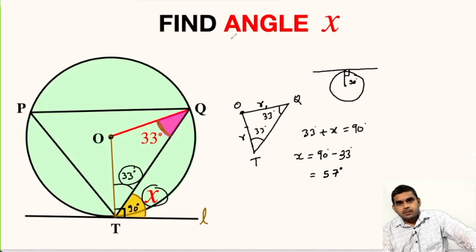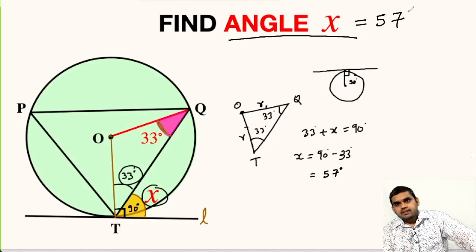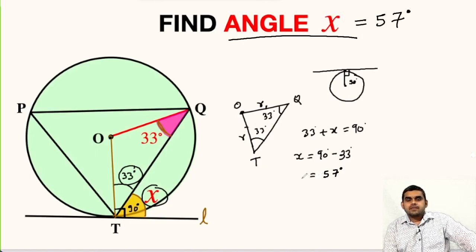So the measure of this unknown angle x will be equal to 57 degrees. If you like this video, share it with your friends and do not forget to subscribe my channel.